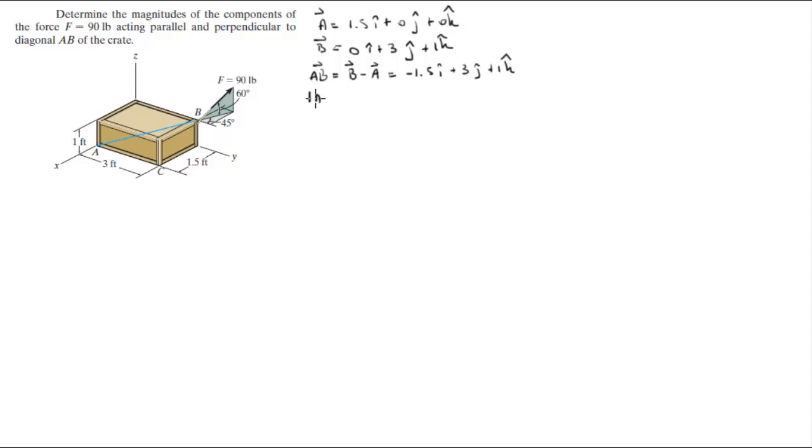Now you need to find the magnitude of this vector. The magnitude is the square root of the x component squared plus the y component squared plus the z component squared, and it comes out to be 3.5. The unit vector AB can be found by dividing the vector AB by its magnitude, and it comes out to be negative 0.429i plus 0.857j plus 0.286k.